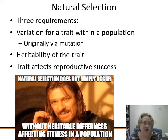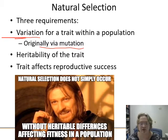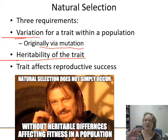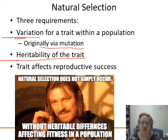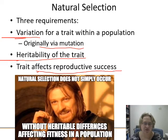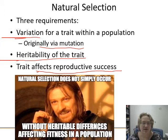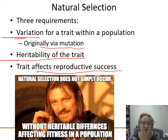Three requirements for natural selection: first, you must have variation within a trait — which originally came from mutation. Second, it needs to be heritable — it can't be purely cultural. Third, the trait has to affect reproductive success — whether that means you could have more offspring or provide resources enabling your mate to have more of your offspring. You need all three for natural selection to occur.